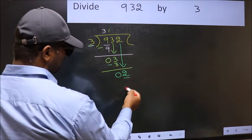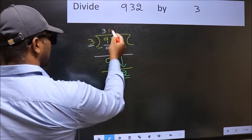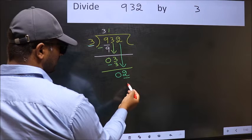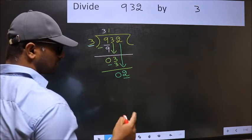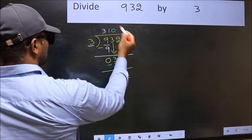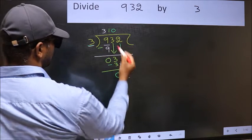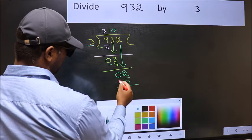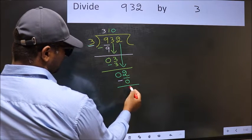What number should be right here? If I take 1 here, I will get 3. But 3 is larger than 2. So what we should do is we should take 0. So, 3 into 0 is 0. Now you should subtract. 2 minus 0, 2.